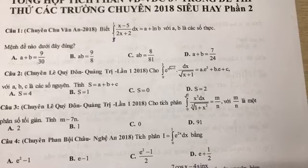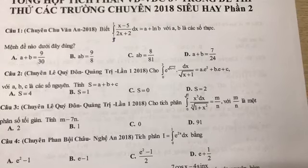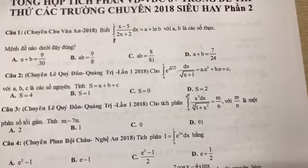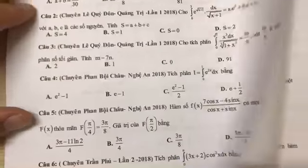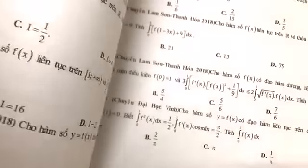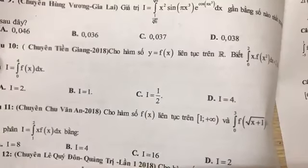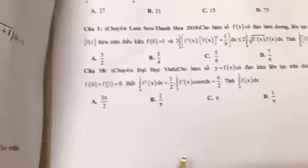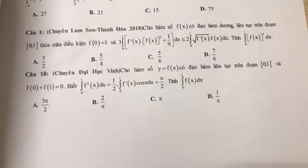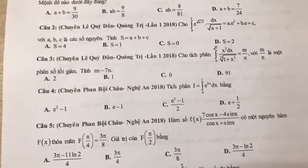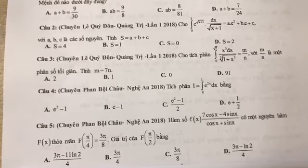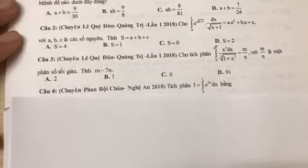Những bạn vào rồi thì comment họ tên đầy đủ xuống dưới để điểm danh. Phần mềm sẽ auto điểm danh của các bạn hết. Hôm nay sẽ có 2 chuyên mục: câu 1 đến câu 9 là các câu tích phân thường gặp trong đề thi, còn câu 10 đến câu 18 là những câu khó, thường là tích phân của hàm ẩn.